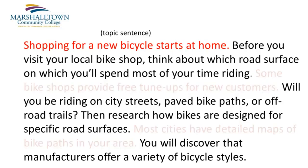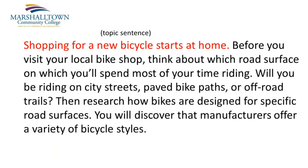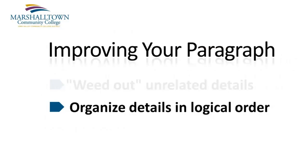Now let's go ahead and delete the questionable sentences and see how the paragraph looks. Shopping for a new bicycle starts at home. Before you visit your local bike shop, think about which road surface on which you'll spend most of your time riding. Will you be riding on city streets, paved bike paths, or off-road trails? Then research how bikes are designed for specific road surfaces. You will discover that manufacturers offer a variety of bicycle styles. That sounds much better. Now let's take a look at how organization can help make your paragraph more clear and concise.